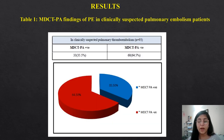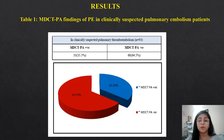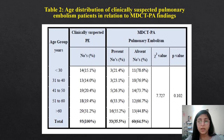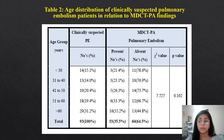Results were categorized into 10 tables. Table 1 gives the MDCTPA findings of PE in clinically suspected pulmonary embolism patients. Out of 93 patients suspected to have pulmonary thromboembolism, around 33 patients — approximately 35% — were found to have pulmonary embolism. Age distribution showed that the majority of both suspected and confirmed PE patients were in the age group of more than 60 years.